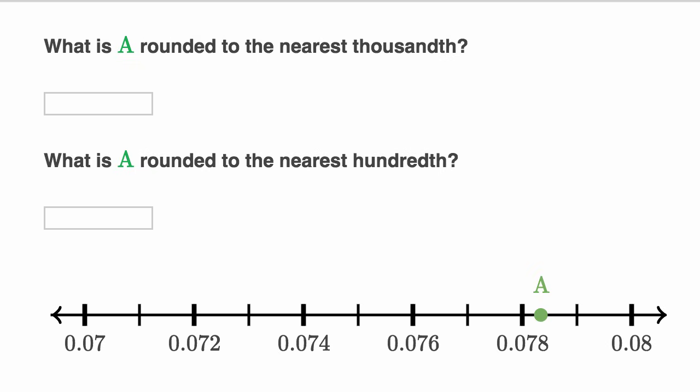So this is between 78 thousandths and 79 thousandths. So if we round to the nearest thousandth, it looks closer, in fact it's definitely closer to 78 thousandths than it is to 79 thousandths. So I would say this is 0.078 or 78 thousandths. It's closer, that's the nearest thousandth.